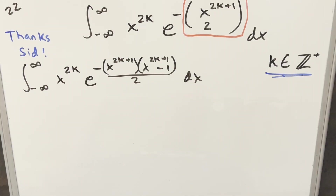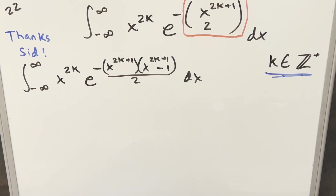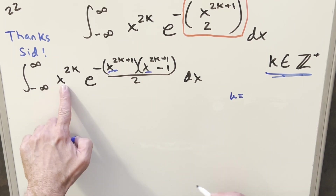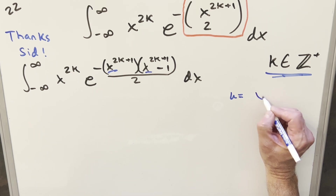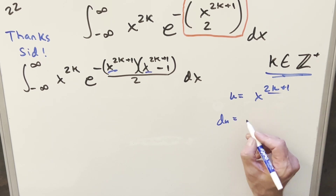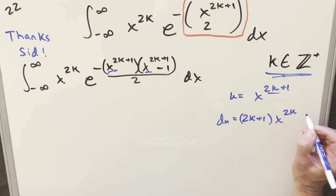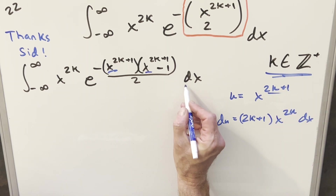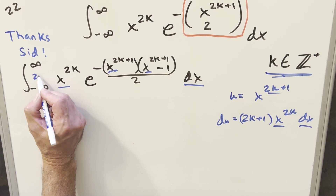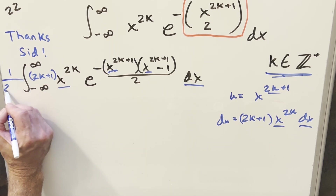Now that we've handled our binomial coefficient we're doing pretty good, but we still have a pretty big mess in the exponent. Let's do a u-substitution. We have x^(2k+1) in common, so if I set u equal to x^(2k+1) and take a derivative, we get du equal to (2k+1) times x^(2k) dx. To set this up, I'll multiply (2k+1) inside the integral and divide by it out front, so I'm not changing the problem.